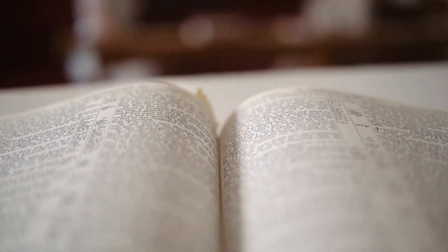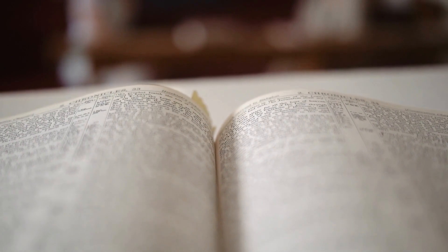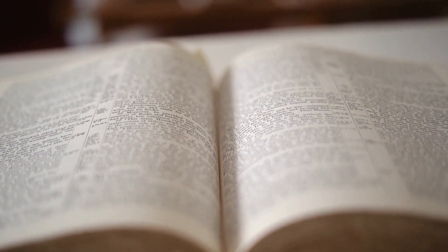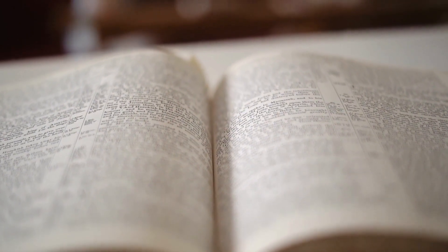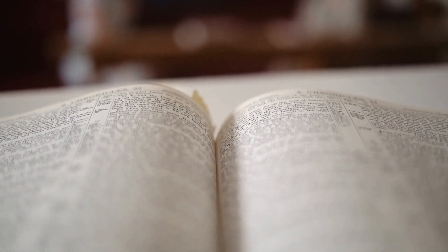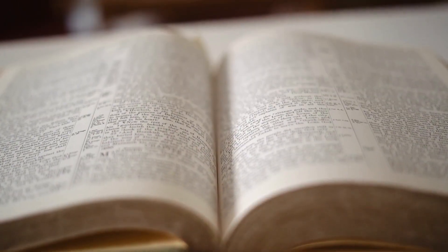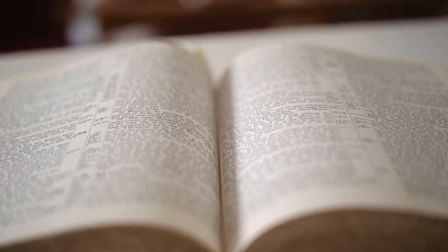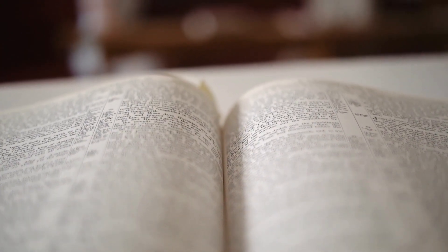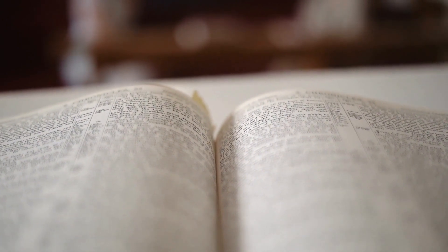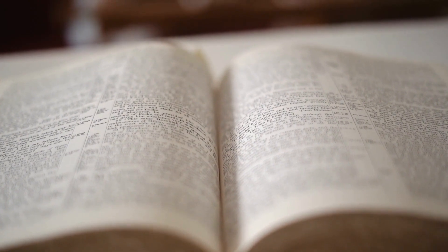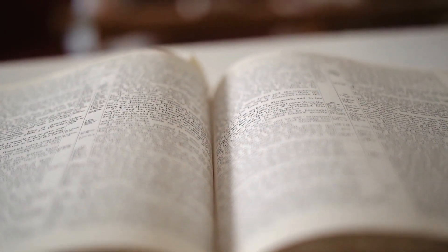Then Abraham drew near and said, Will you indeed sweep away the righteous with the wicked? Suppose there are fifty righteous within the city. Will you then sweep away the place and not spare it for the fifty righteous who are in it? Far be it from you to do such a thing, to put the righteous to death with the wicked, so that the righteous fare as the wicked. Far be that from you. Shall not the judge of all the earth do what is just?